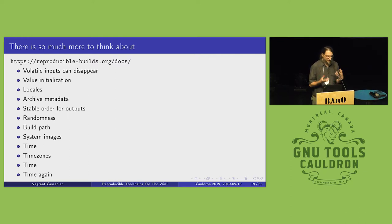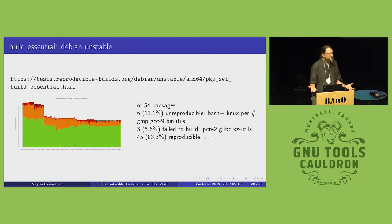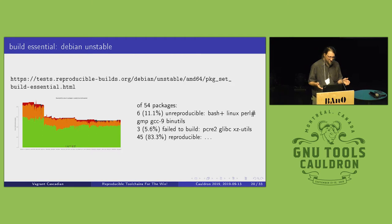This covers some ways to incorporate ideas and features into the actual toolchain itself. But the toolchain itself is also important to be reproducible. Right now in our test suite for Debian unstable, there are six key unreproducible packages: bash, Linux, Perl, binutils, GCC, and a few others. Some also failed to build — Glibc, though I'm not sure exactly why, as these results were hot off the press earlier this morning.